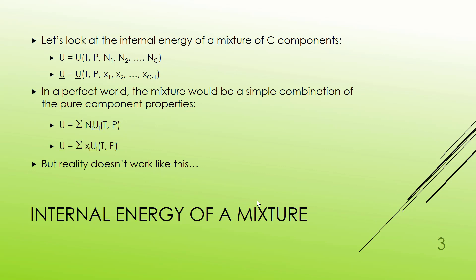I also could have the specific U value, which is the intensive version of U, and I'm going to designate that with an underscore, and again that would be a function of my two intensive properties, T and P, as well as the mole fractions of the first C minus one of the components. Now I don't need to have that C-th component because the sum of the X's will equal one, so that actually does not add any additional information.